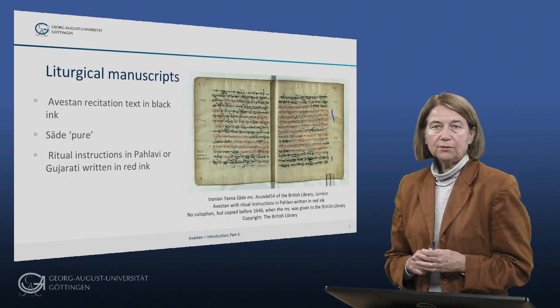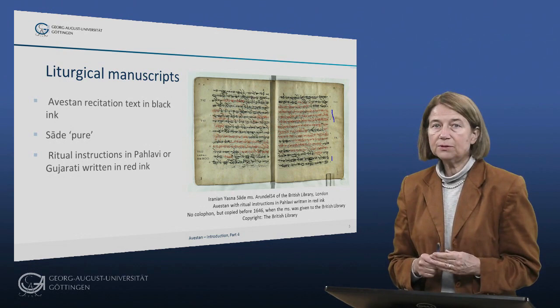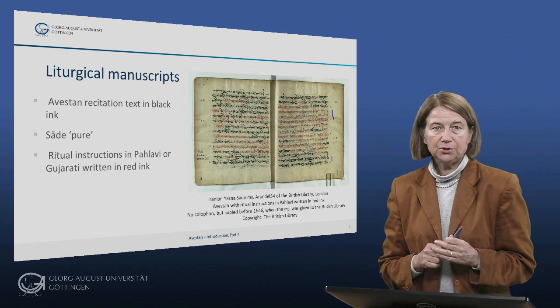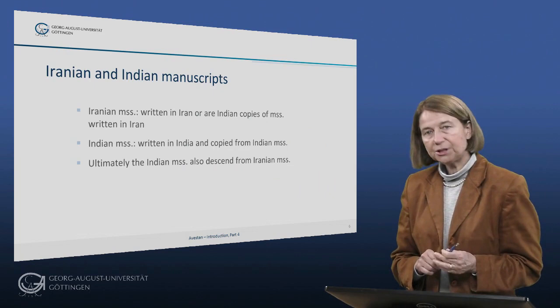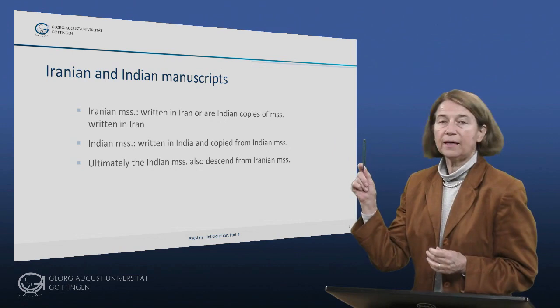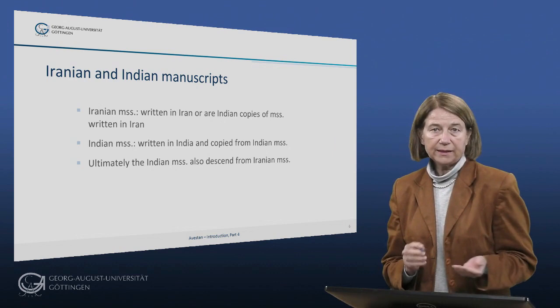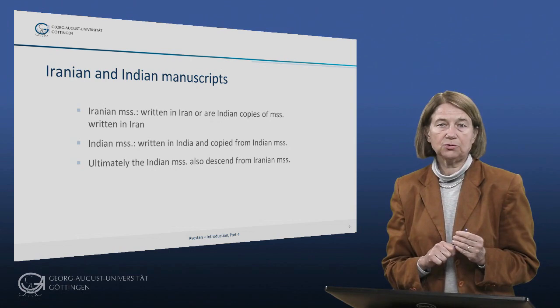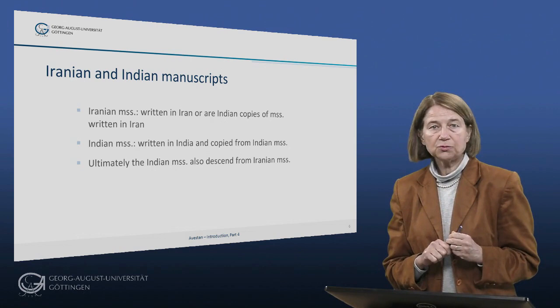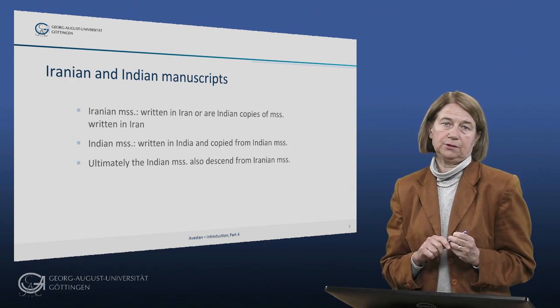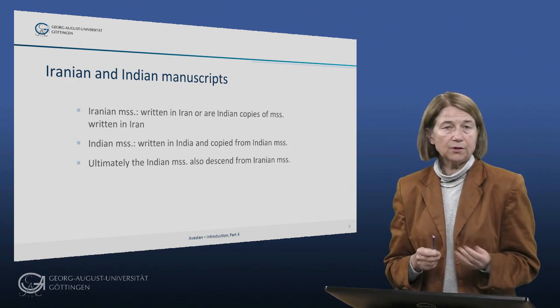So these manuscripts give us full descriptions of the ceremonies, both in terms of the text to be recited and of the actions to be performed. The liturgical manuscripts fall into two major groups: Iranian and Indian. The manuscripts of the Iranian group were written in Iran or are copies of manuscripts written in Iran and copied in India. Manuscripts of the Indian branch were copied in India from Indian originals. Ultimately, however, the Indian tradition derives from the Iranian tradition.